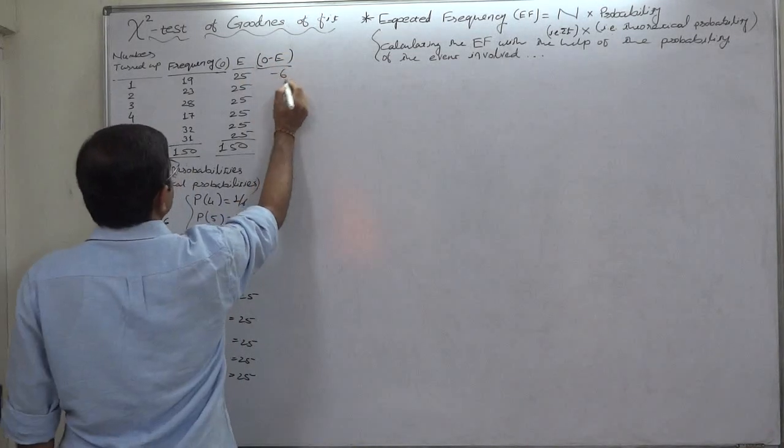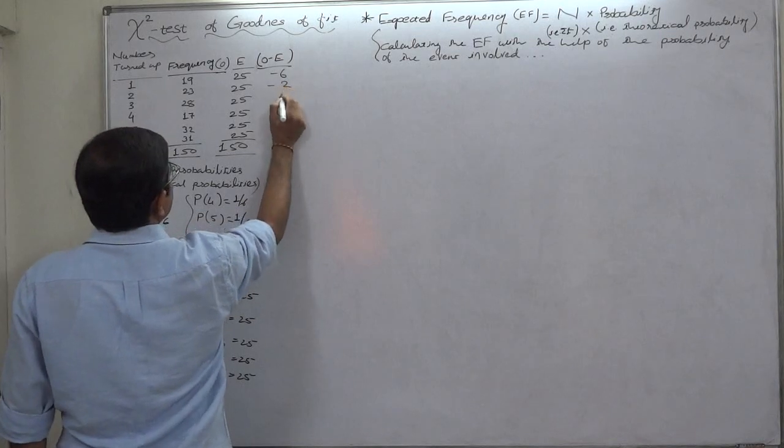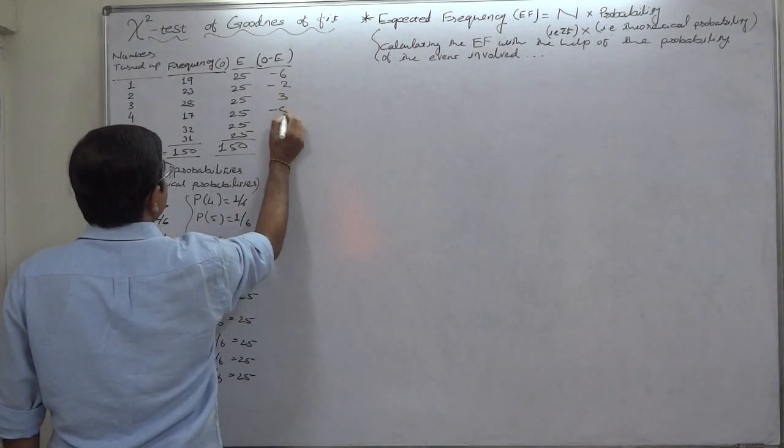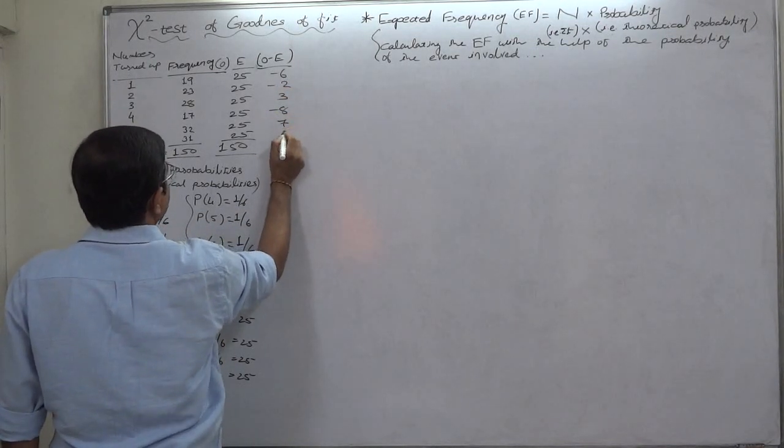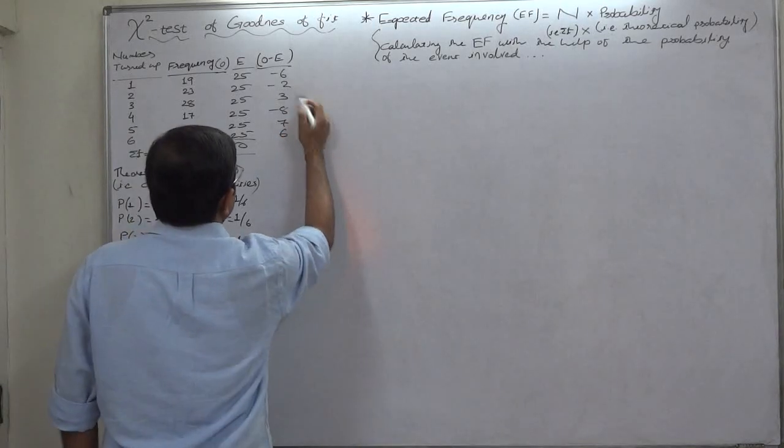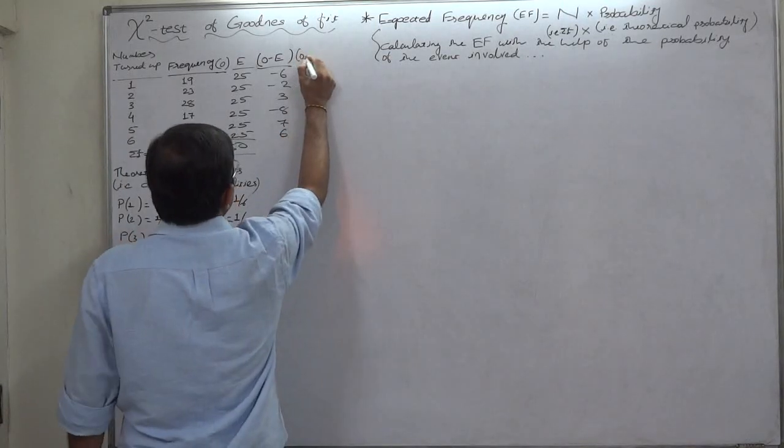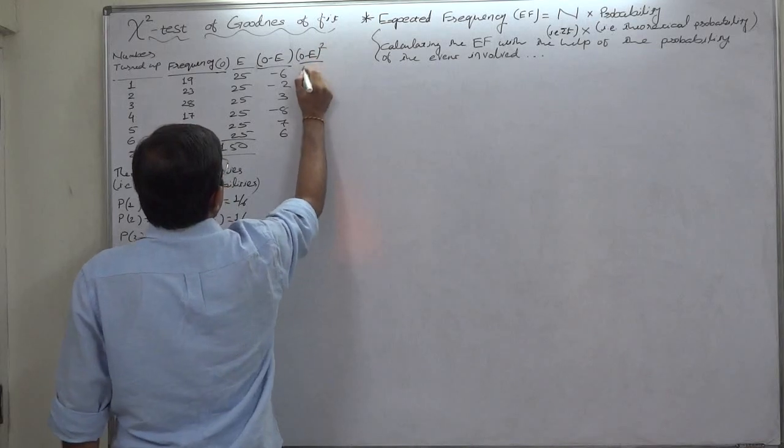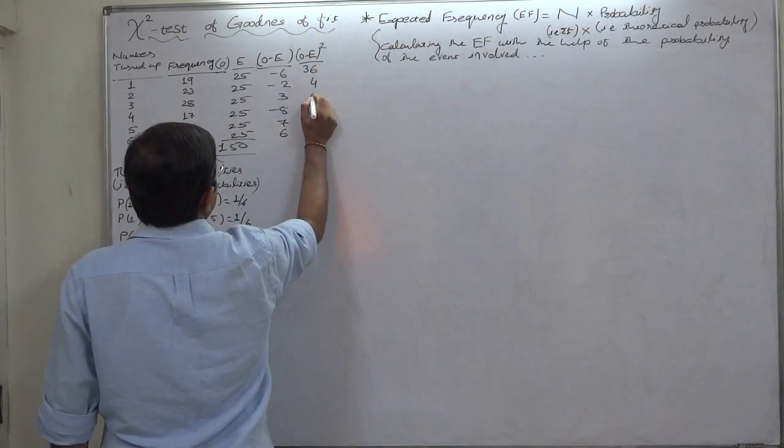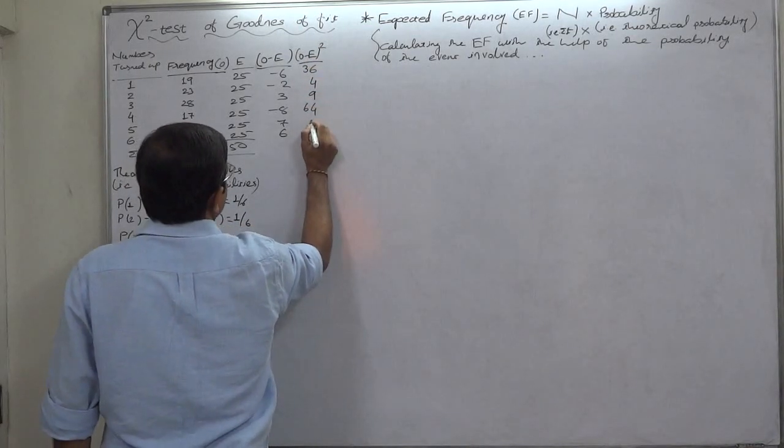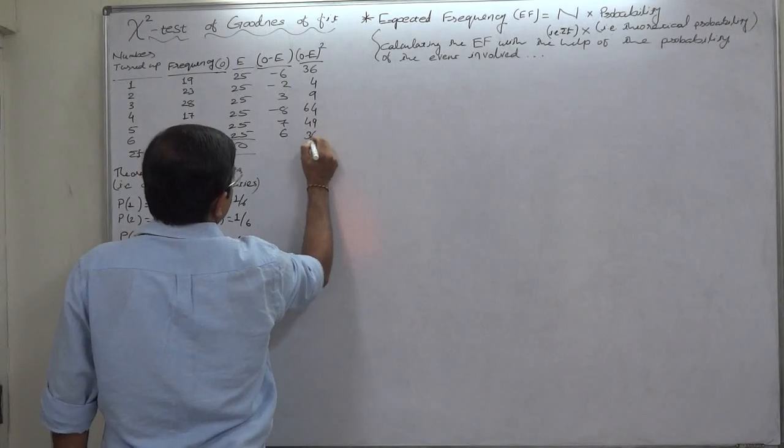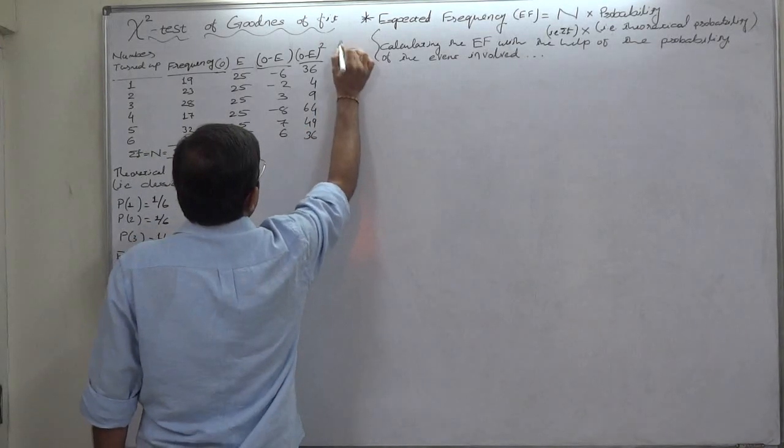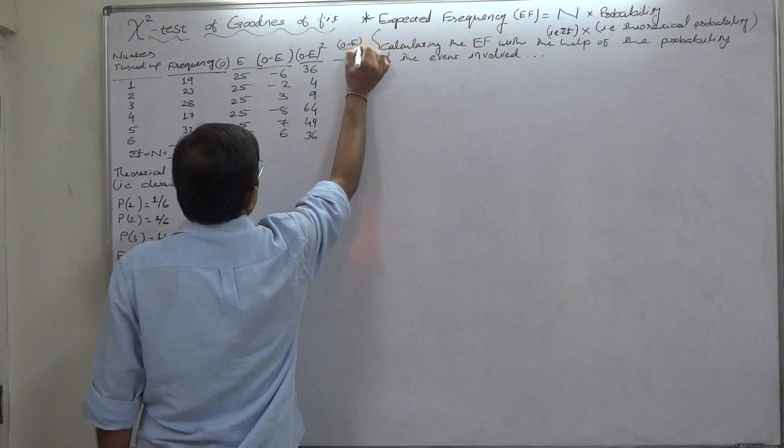19 minus 25 is minus 6, minus 2, positive 3, minus 8, positive 7, positive 6. O minus E the whole square: 36, 4, 9, 64, 49, and 36.